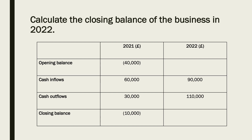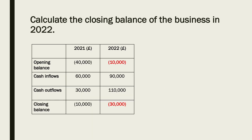Okay, hopefully you had a chance to do that. Let's look at the answers. The opening balance for 2022 is negative £10,000 — remember, brackets means negative or minus £10,000. And the closing balance is minus £30,000.